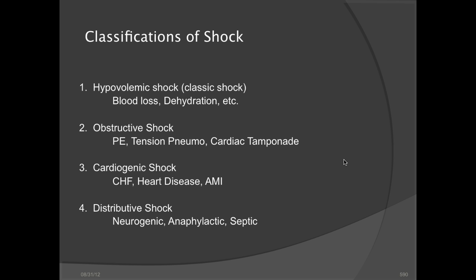There are four classifications of shock. There's hypovolemic shock, which is the classic type of shock you're going to see — this occurs with blood loss and dehydration. Then there's obstructive shock, caused by pulmonary embolism, tension pneumothorax, as well as cardiac tamponade. You'll see cardiogenic shock, which is usually late stages of congestive heart failure, heart disease, and acute myocardial infarction. And then there's distributive shock, which has three types: neurogenic, anaphylactic, and septic shock.